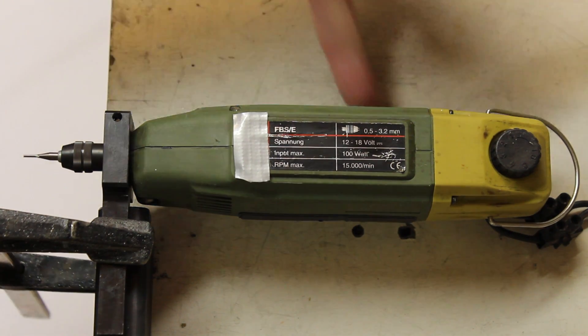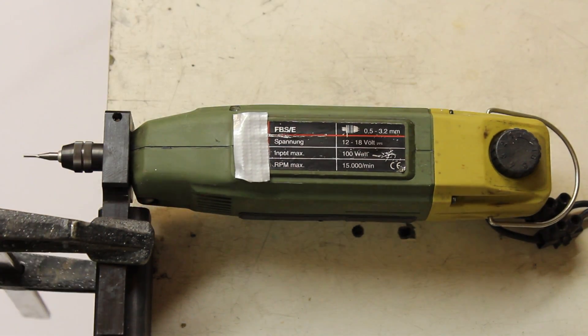The maximum revolution speed is weighted with 15,000 rounds per minute.